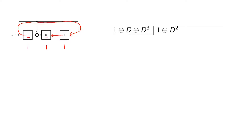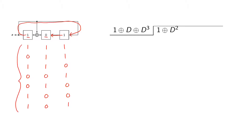For the next state, the leftmost one goes to the rightmost position, the rightmost goes to the middle position, and the sum of the two leftmost positions gives the new leftmost bit. Continuing: next state is 0, 1, 1; then 1, 0, 0; then 0, 1, 0; then 0, 0, 1; then 1, 0, 1. Now we are back to the starting state, so we have covered seven different states in total. The eighth possible state is the all-zero state, which will also appear in our state transition graph.